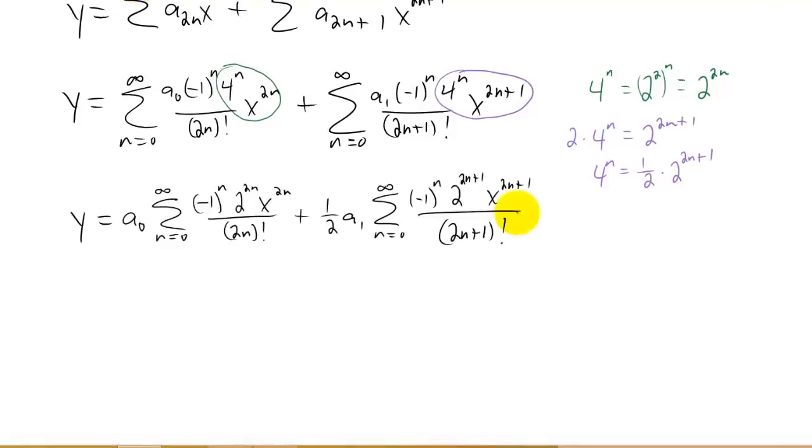Now hopefully it's pretty clear why we did that little bit of algebra with the green and the purple. We have the same power on the 2 as we do on the x. So we can actually just group this together into one term just like that, and likewise with the 2n plus 1. Just like the problem we did in class, these summations are starting to look pretty familiar.